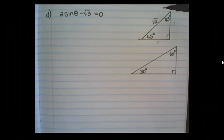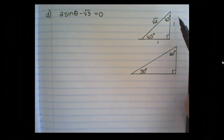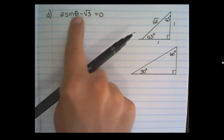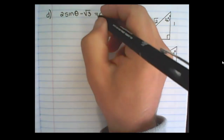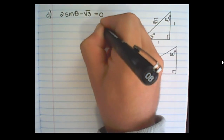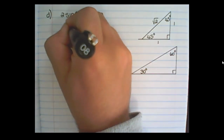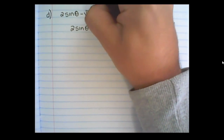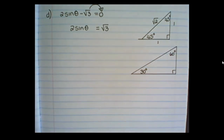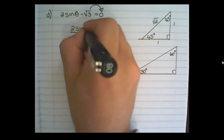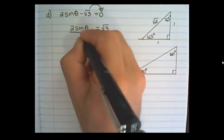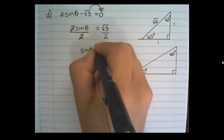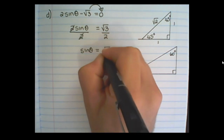Another application of special triangles is solving for theta. In this equation, we want to write sine theta by itself. First, move the √3 over to get 2 sine theta equals √3. Remember when we transpose, we change a negative to a positive. Now divide both sides by 2 to get sine theta alone, so sine theta equals √3 over 2.